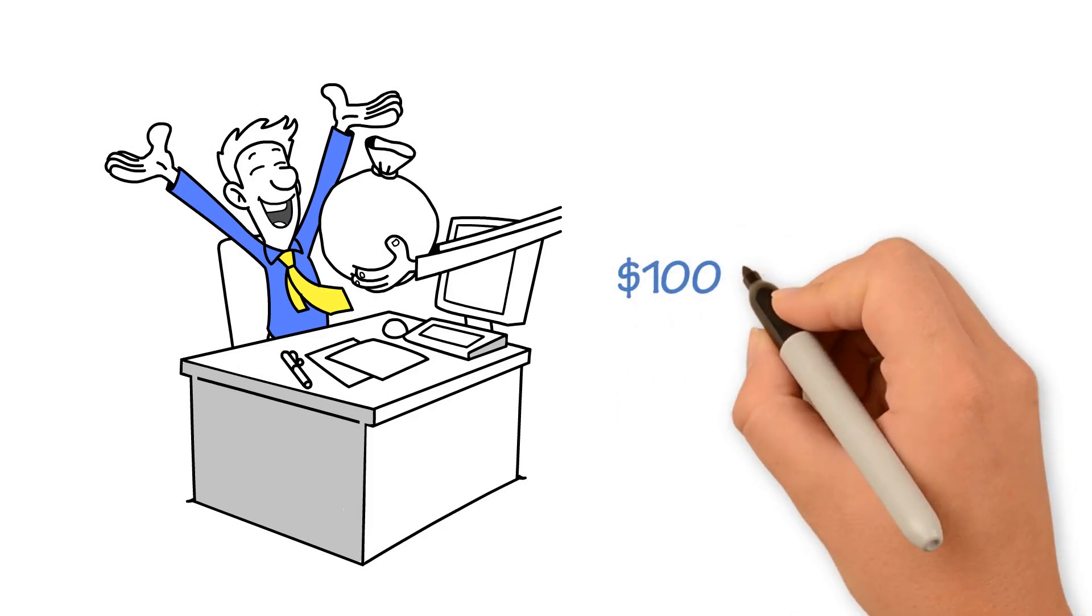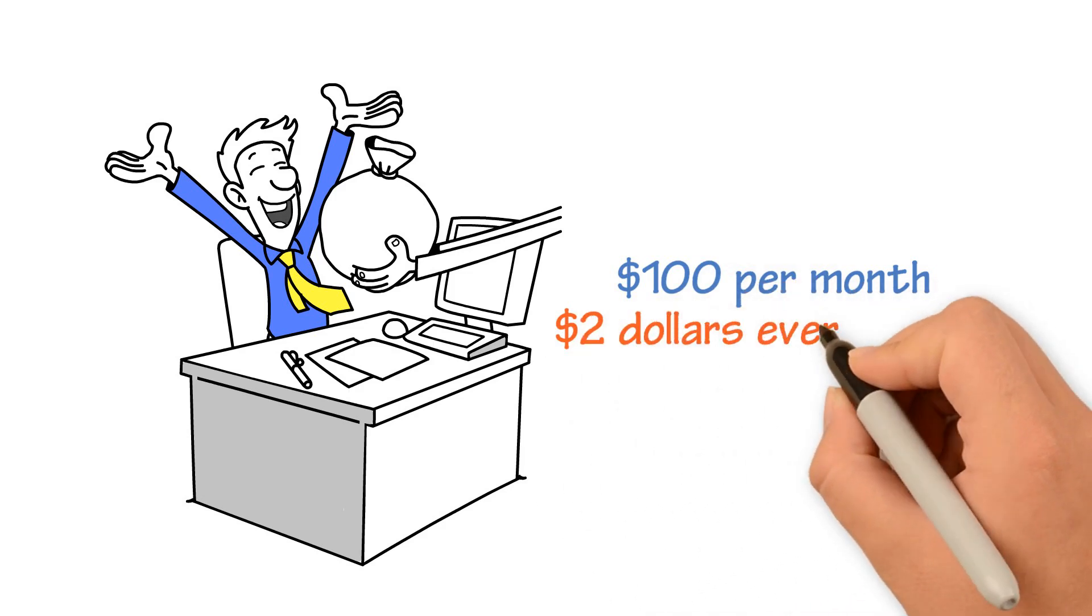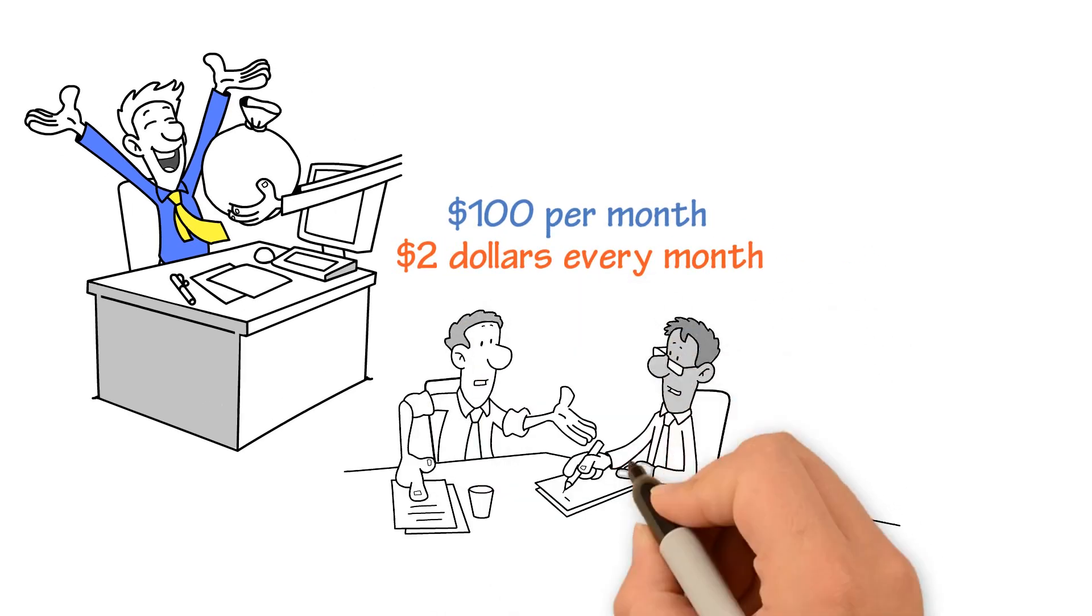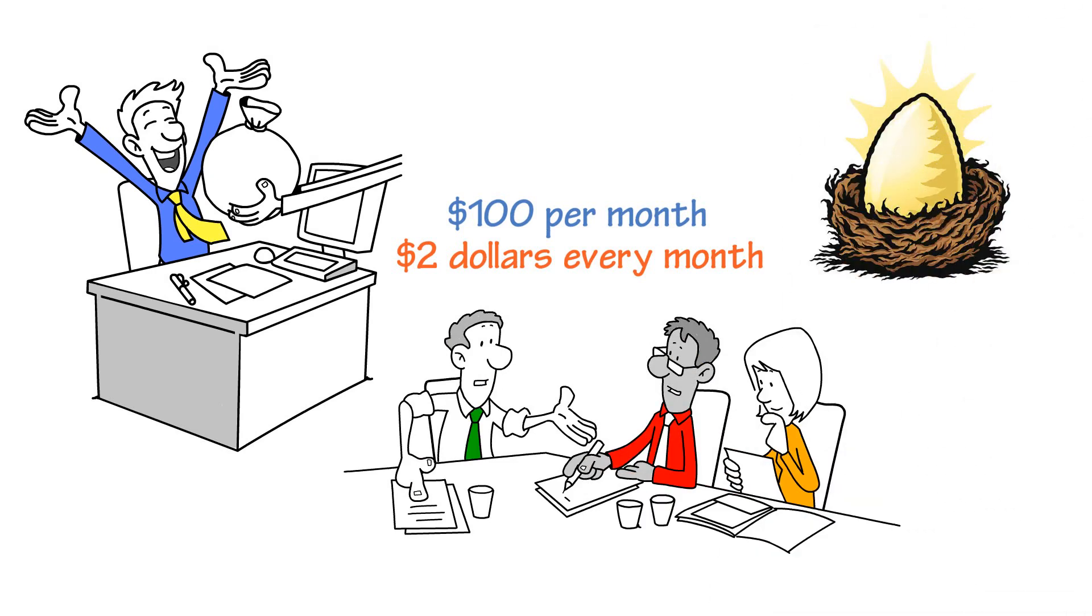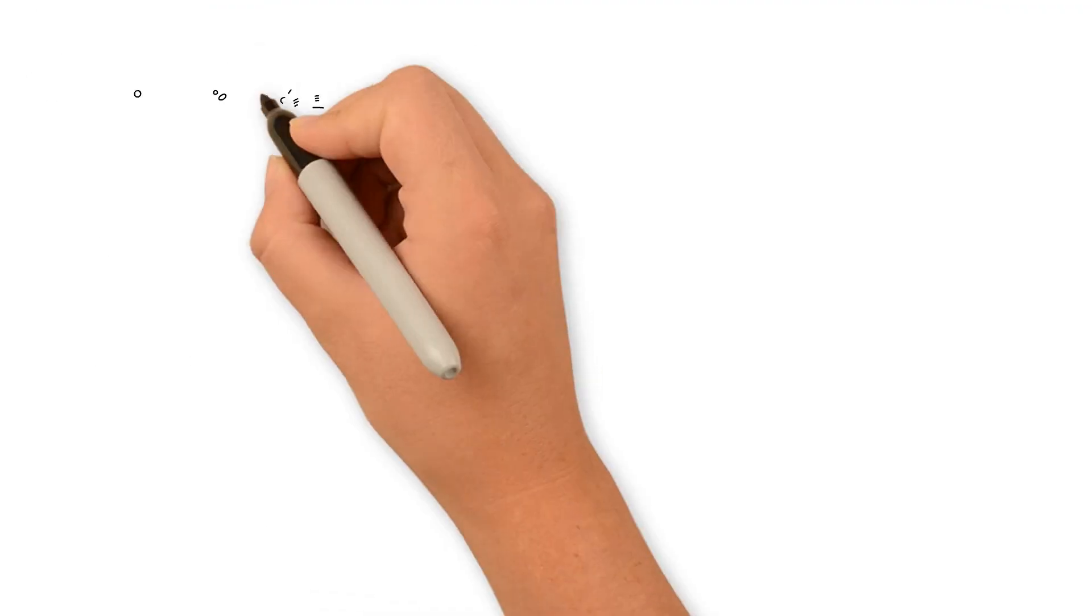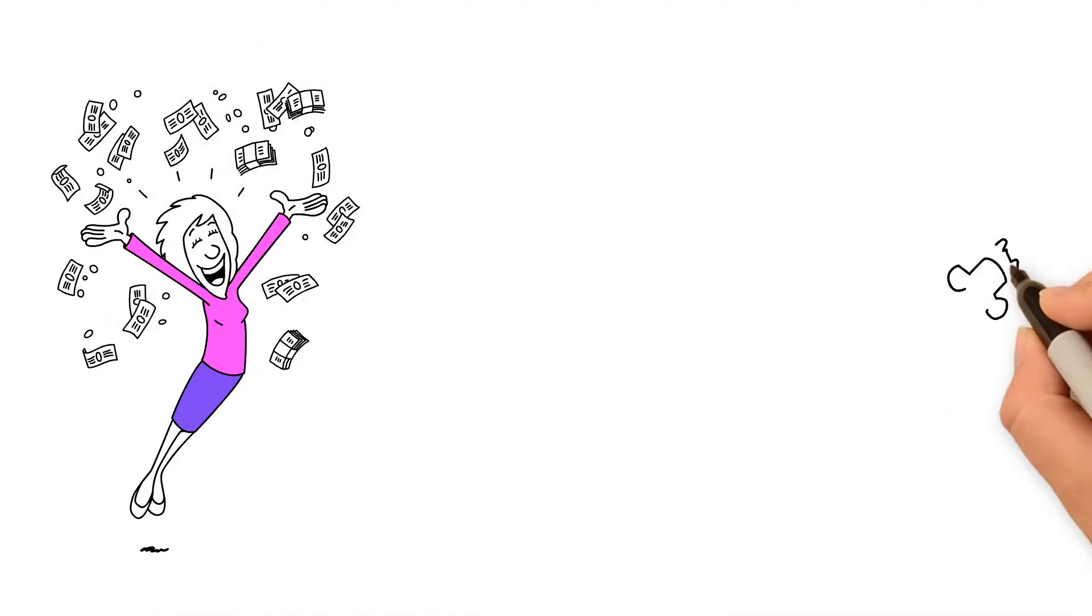Now if the client is paying $100 per month, you're going to receive $2 every month they pay. This is all from the sale you made a year ago. No more work is involved. We call it your nest egg. Because if you sell 10 policies a month, after 10 years, you're going to be making tons of money. It's just straight passive income.